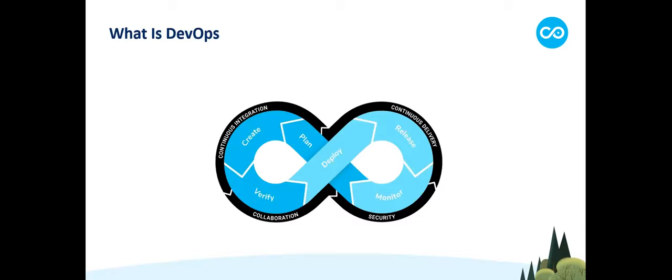So what is DevOps? DevOps is a combination of practices that automate and enable greater effectiveness in the process of building and running software. DevOps combines technical practices of continuous delivery — meaning you can get your changes all the way to production quickly, safely, and sustainably — as well as business practices such as lean management or lean product development. DevOps is all about building a culture of collaboration between teams that in the past functioned separately.